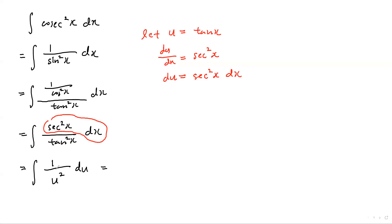Now we are left to integrate 1 over u-square, which is relatively much easier. That would be negative 1 over u plus c.